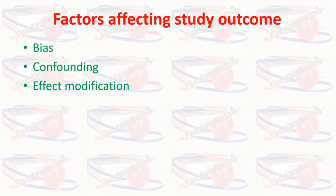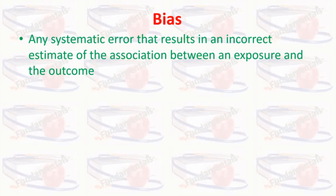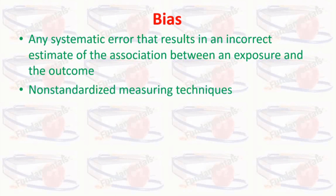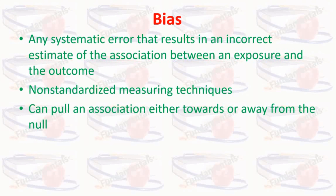These factors are of three types: bias, confounding, and effect modifiers. Bias is any systematic error that results in an incorrect estimate of the association between an exposure and the disease. It is usually introduced by the researcher due to non-standardized measuring techniques. Bias can pull an association either towards or away from the null — that is, it can change the direction of the results completely.